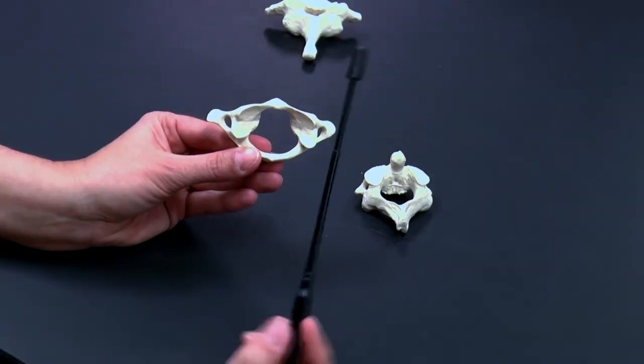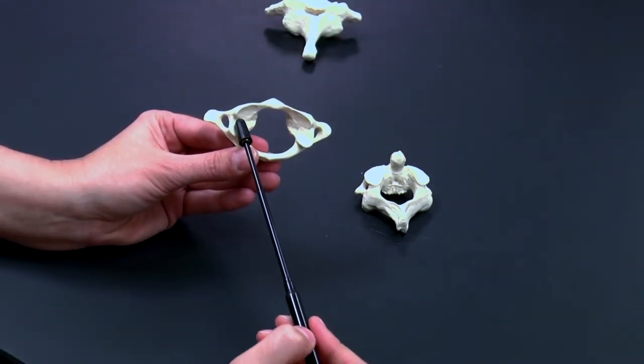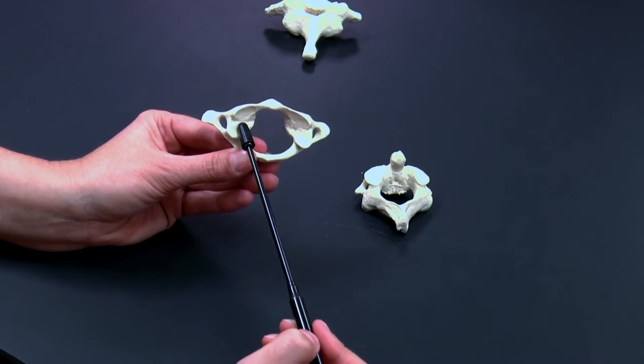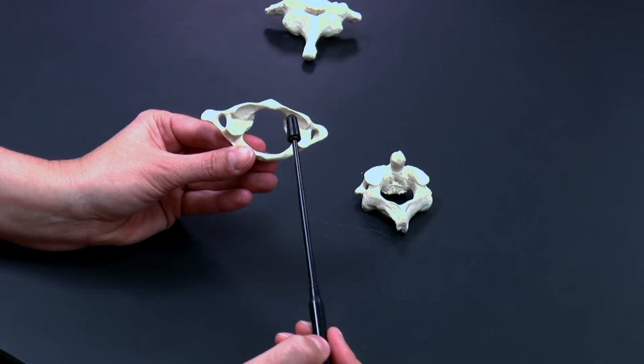So this is C1, also known as the atlas. It's so named because it supports the weight of the head, much like the mythical creature Atlas supported the weight of the world on his shoulders.